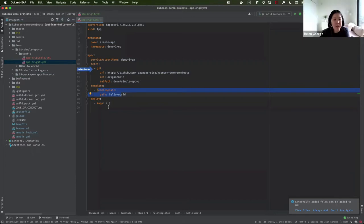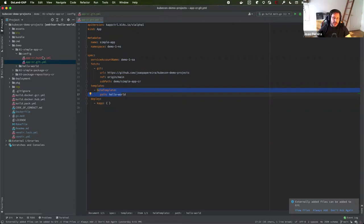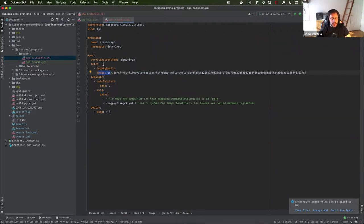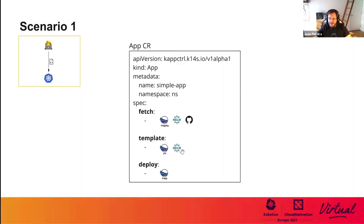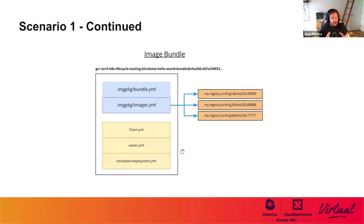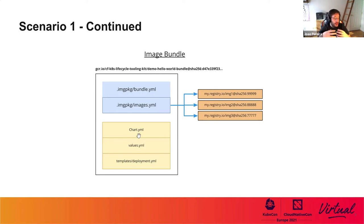What would it look like if instead of using Git here, we used imgpkg? So I have an example here of using an imgpkg bundle. An imgpkg bundle is an OCI image that contains two distinct sets of files — represented here in blue and yellow. The yellow files are configuration files. In our case, we'll have our Helm chart containing the chart YAML, the values YAML, our templates, and so on. You can add whatever you want; there's no real structure requirement, except if you use Helm, you need to follow the Helm structure.